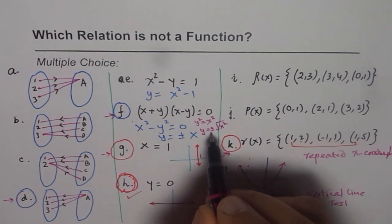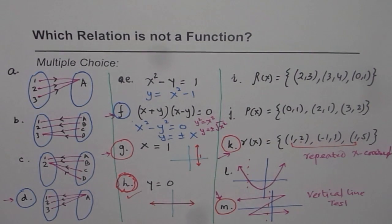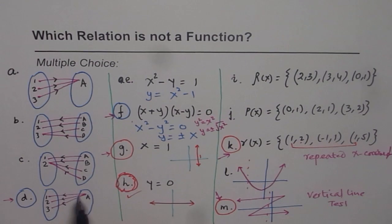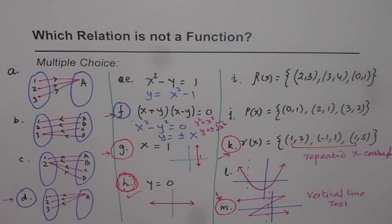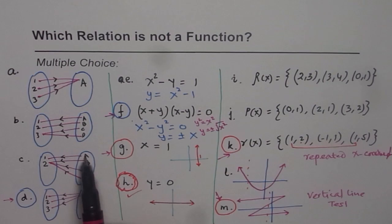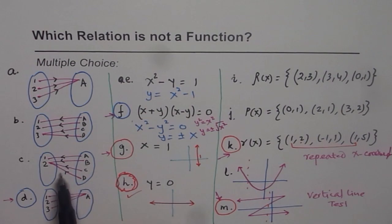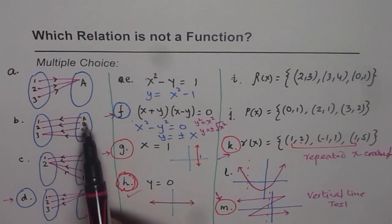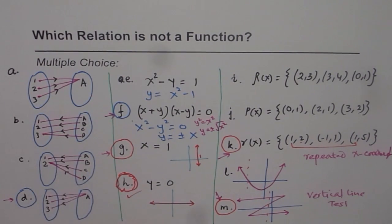When y has two possible values for one x-value, that confirms it is not a function. For the mapping diagram, if one input (like A) is associated with more than one output, it is not a function. Note that arrows in mapping diagrams can point from left to right or right to left — that's important to check on a test. I hope this helps. Thank you and all the best!